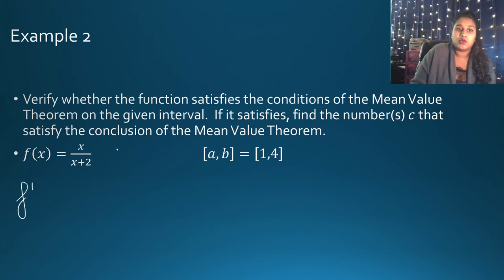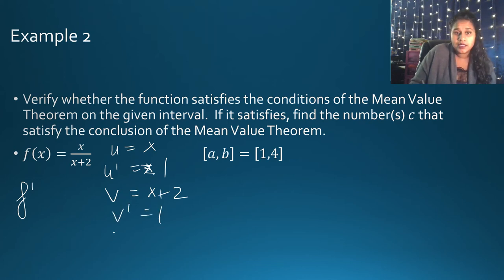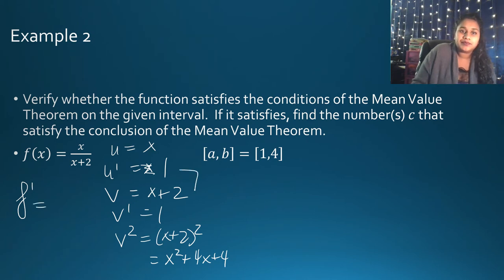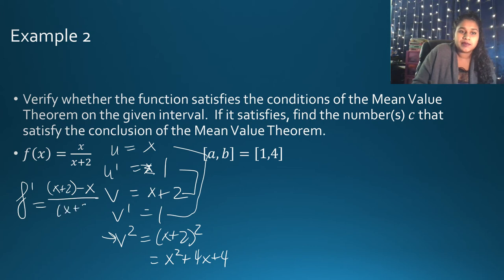Then I take the derivative using the quotient rule. Declaring U, U', V = X + 2, and V' = 1, with V² = (X + 2)². The numerator becomes (X + 2) minus X, all over (X + 2)². The X's cancel, leaving F'(X) = 2 / (X + 2)².